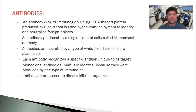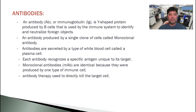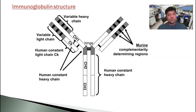An antibody produced by a single clone of cells is called a monoclonal antibody. Antibodies are secreted by a type of white blood cells called plasma cells. Each antibody recognizes a specific antigen unique to its target. Monoclonal antibodies are identical because they are produced by one type of immune cell. Antibody therapy is used to directly kill target cells — bacteria, viruses, or particular chemical entities inside the body.